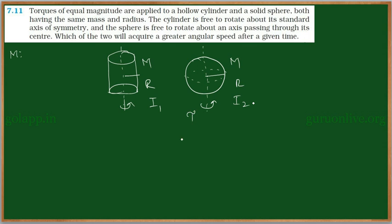For the same torque, we need to find out which is having more angular velocity at a particular time. So, we need to find out the body which is having more angular velocity, either cylinder or sphere. That is our motive.